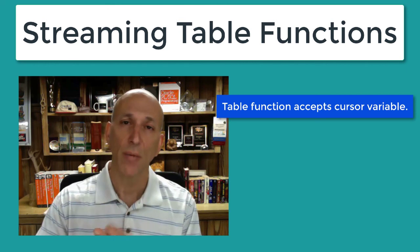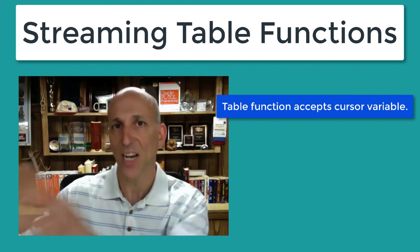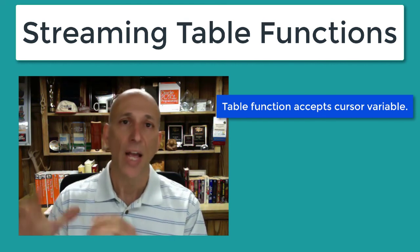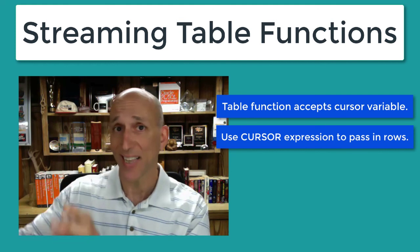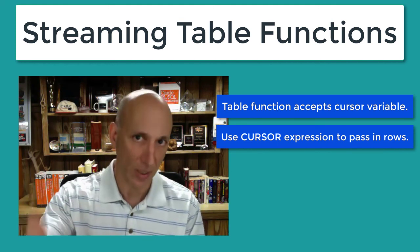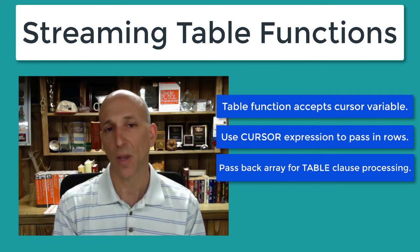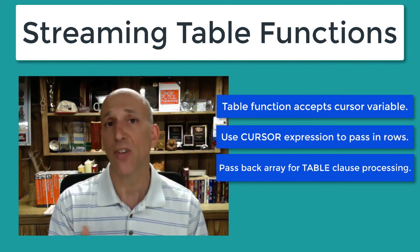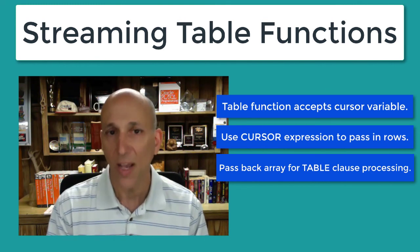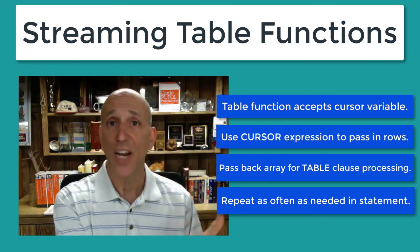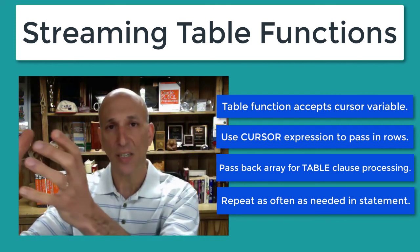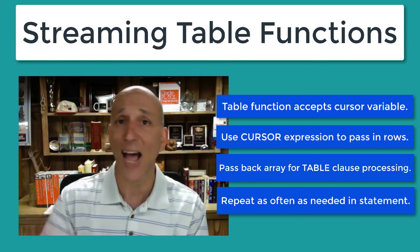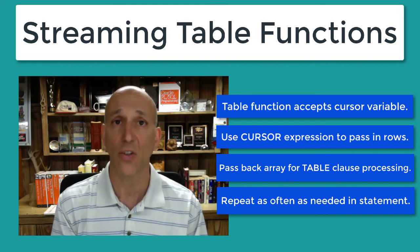To summarize: your table function accepts a cursor variable — a set of data coming in from the SQL statement. You use the cursor expression in that SQL statement to convert the data set to a cursor variable passed into the table function. The table function passes back a collection — nested table or varray — for processing through the table clause. Then you repeat and chain transformations as often as needed until you get to the desired state of data, and put it into a report, a create table as select, or whatever fits your application requirements.